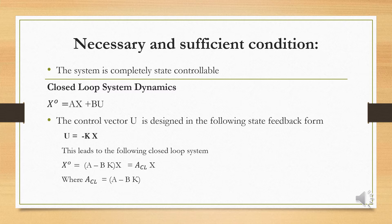We can modify the state equation. The system matrix changes to A minus BK, which is the closed loop system matrix. So x-dot equals A_cl into x, where A_cl equals A minus B times K.